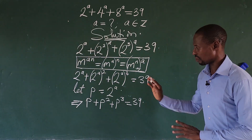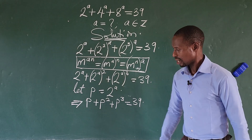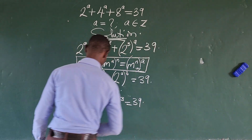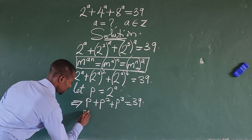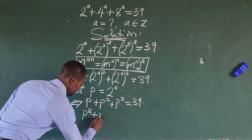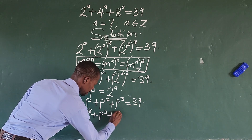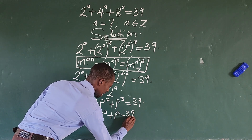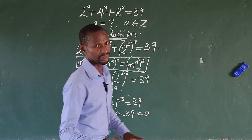We just have to rearrange, starting with the highest power and moving the 39 to this side of the equation. So we're going to have p to the power of 3, plus p to the power of 2, plus p, minus 39, equal to 0.